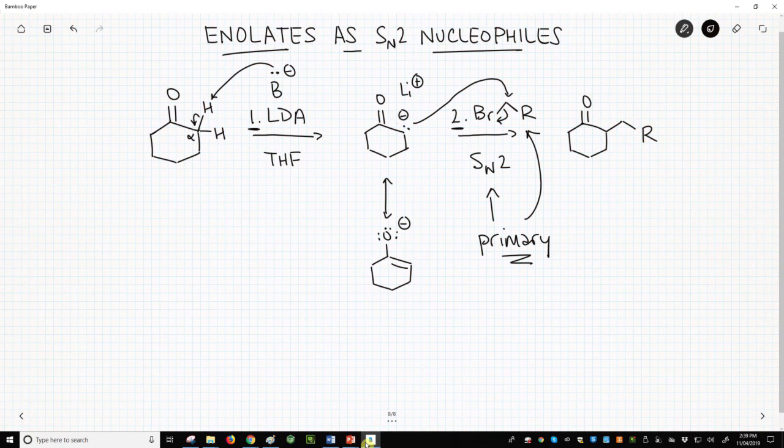Hindered halides, like secondary halides, will undergo an E2 reaction. The net effect of this reaction is extension of the carbon chain on the ketone.